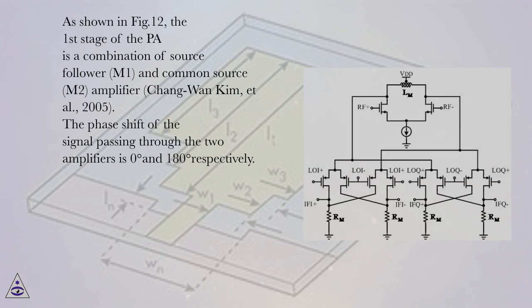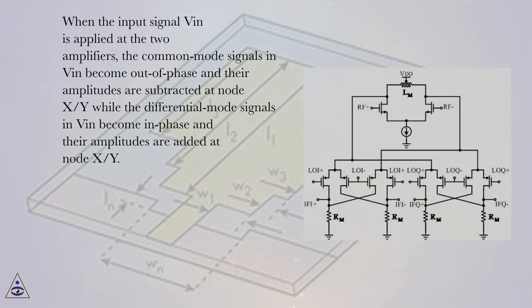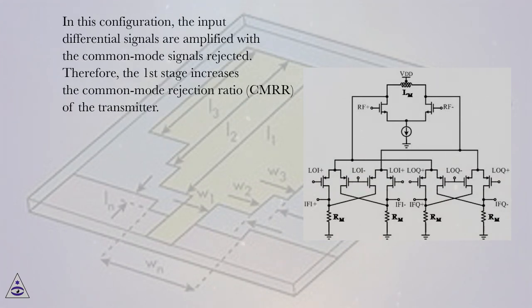The phase shift of the signal passing through the two amplifiers is 0 degrees and 180 degrees respectively. When the input signal VIN is applied at the two amplifiers, the common mode signals in VIN become out of phase and their amplitudes are subtracted at node XY while the differential mode signals in VIN become in phase and their amplitudes are added at node XY. In this configuration, the input differential signals are amplified with the common mode signals rejected. Therefore, the first stage increases the common mode rejection ratio, CMRR, of the transmitter.